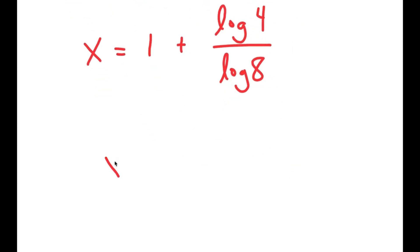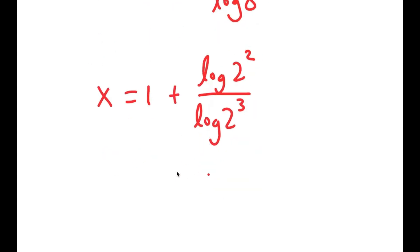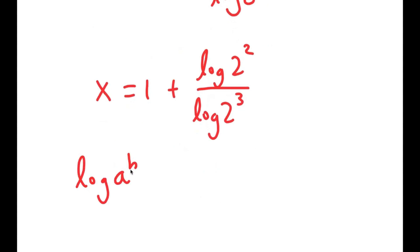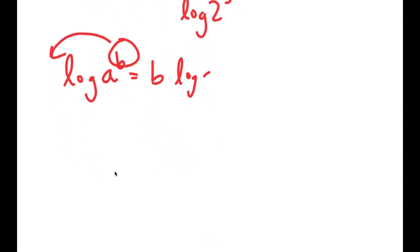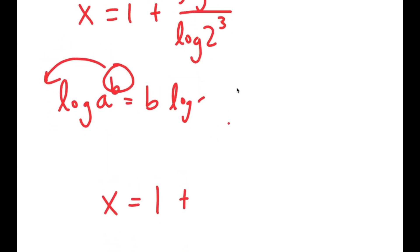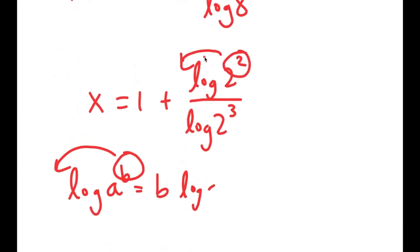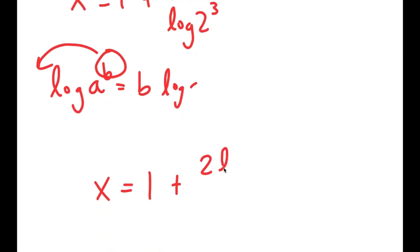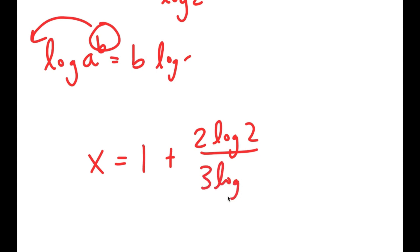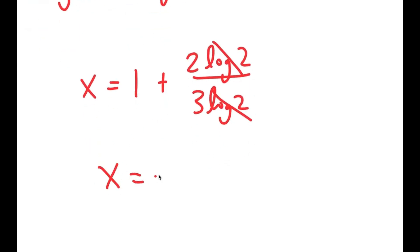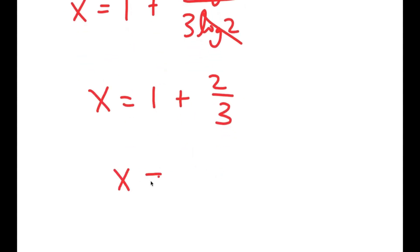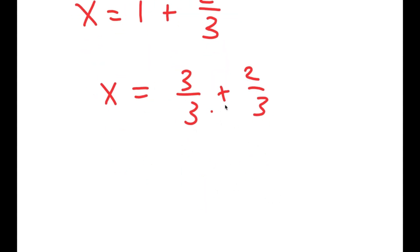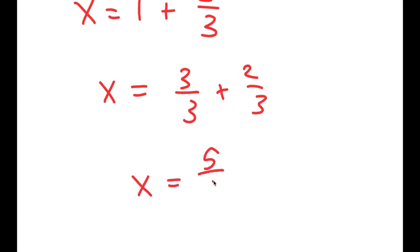Now, log of 4 is the same thing as log of 2 squared, and log of 8 is the same thing as log of 2 to the power of 3. Using the power rule again, I can move the exponents to the front. So I get x is equal to 1 plus 2 times log 2 over 3 times log 2. These two log 2 terms cancel out, and I get x is equal to 1 plus 2 over 3, which equals 3 over 3 plus 2 over 3, which is 5 over 3. So x is 5 over 3.